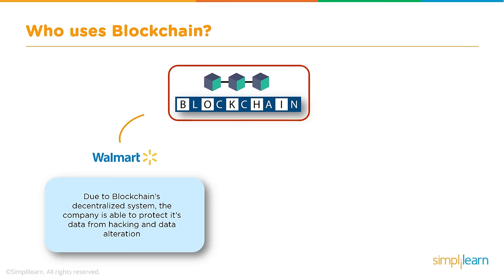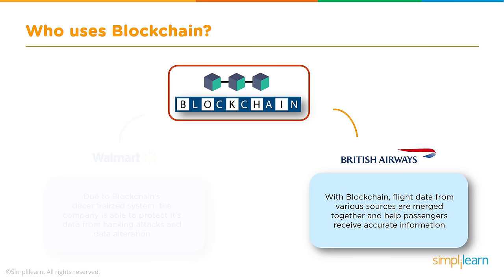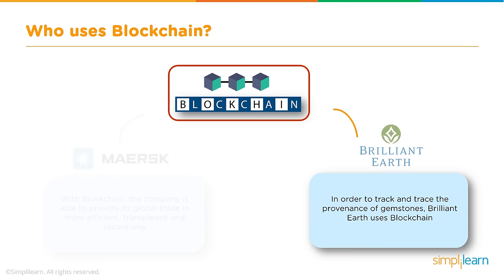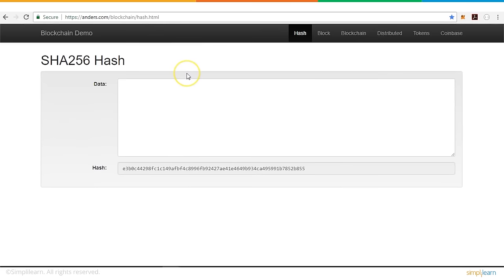Organizations across the globe are adopting blockchain. Walmart uses blockchain's decentralized system to protect data from hacking and alteration. British Airways merges flight data from various sources using blockchain to give passengers accurate information. Maersk uses blockchain for efficient, transparent, and secure global trade services. Brilliant Earth uses blockchain to track and trace the provenance of high-value gemstones.